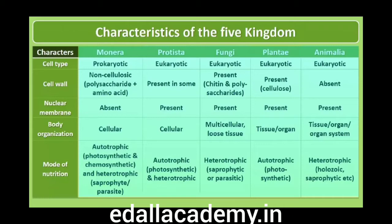Five kingdoms: Monera, Protista, Fungi, Plantae, Animalia. Cell type: Monera are prokaryotic, while Protista, Fungi, Plantae and Animalia are eukaryotic. Cell wall: in Monera it is non-cellulosic polysaccharide plus amino acid; present in some Protista; in Fungi it is present but without cellulose, made up of chitin; in Plantae it is present and made of cellulose; while in Animalia it is absent.